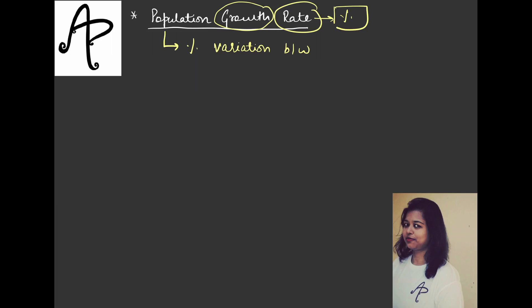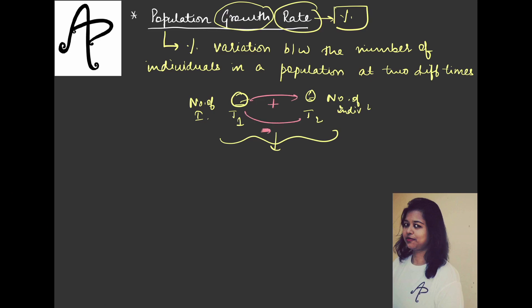So here the term growth can be seen in both positive and negative context. And we can define it as percentage variation because the term rate is used. So percentage variation between the number of individuals in a population at two different times. So at two different times, let's say this is time 1 and this is time 2. Now you will check the number of individuals in a population at two different times and what is the percentage variation between them. So either there are only two possibilities. Either there will be increase or there will be decrease.